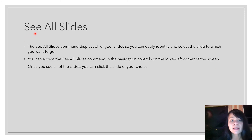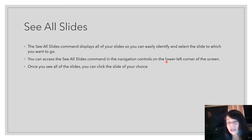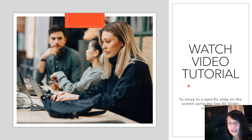The 'See All Slides' command displays all your slides so you can easily identify and select the slide you want to go to. You can access this command from the navigation controls on the lower left of the screen, then simply click the slide of your choice. Please watch the video tutorial on moving to a specific slide using the see all slides command.